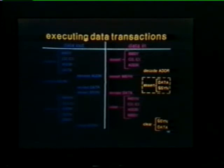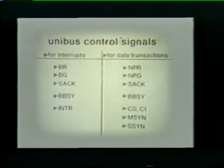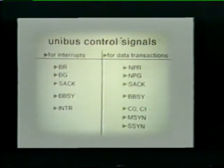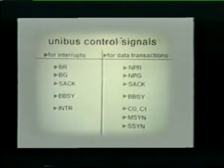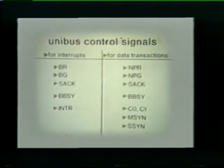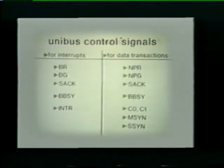Now let's look at the various Unibus control signals discussed in this study unit. There are five signals associated with interrupts. The BR, BG, and SAC signals are used to make the request, honor the request, and acknowledge that the device is to be the next bus master. Once this is done, the device issues bus busy to gain bus control and asserts the interrupt signal to inform the processor that the device needs help. There are seven signals associated with data transactions. The first four are used to gain bus control in the same manner as for interrupts — the only difference is that the request and grant signals are called NPR and NPG rather than BR and BG. The C0 and C1 signals specify the type of data transaction. The two sync signals, master sync and slave sync, are part of the dialog between the master and slave devices.